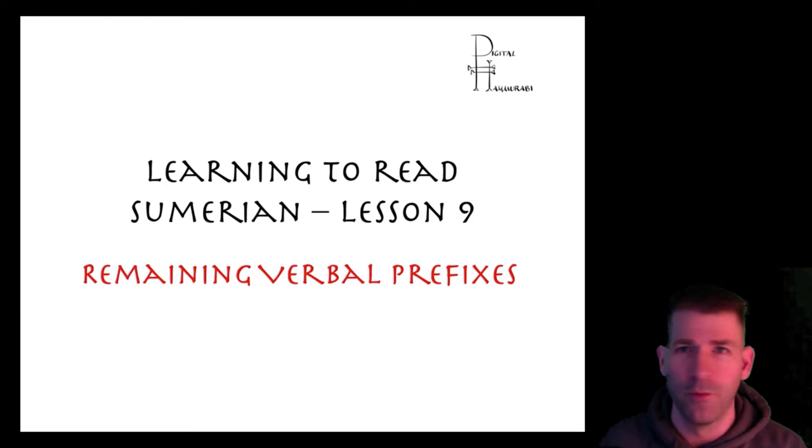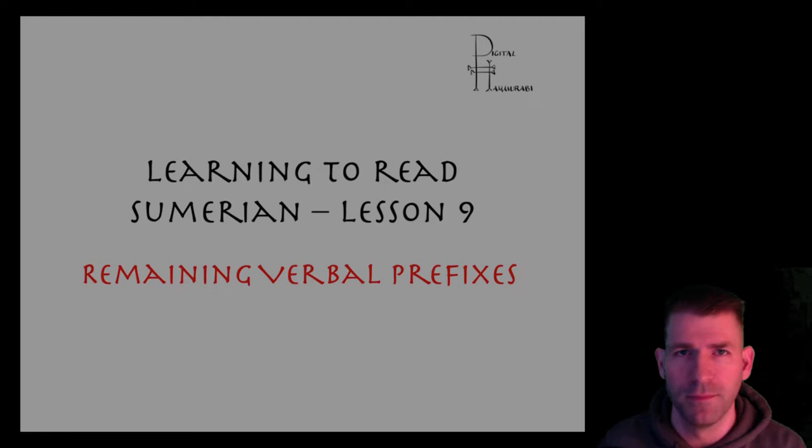There are many nuances and a variety of less common forms that we will cover in the intermediate and advanced books in this series. For now, as always, let's keep things simple. There are basically two types of prefixes that will show up at the very beginning of a Sumerian verbal chain: a conjugation prefix and a modal prefix.